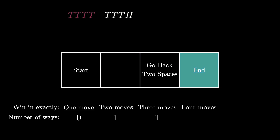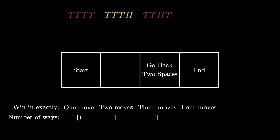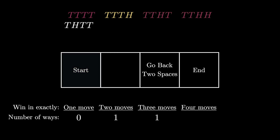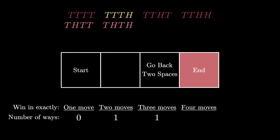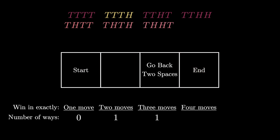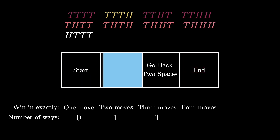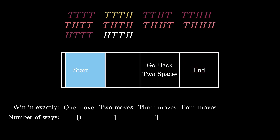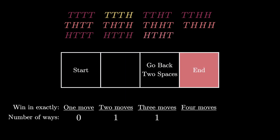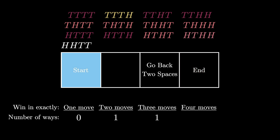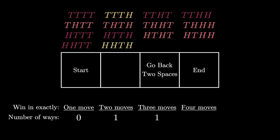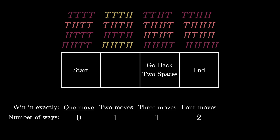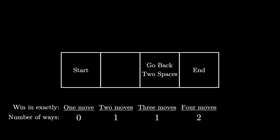Let's run one more example: how many ways are there to win in exactly four moves? Running through the 16 different sequences of length four, some win but in fewer than four moves (highlighted light red), some are losers (deep red), and some are winners in exactly four moves (highlighted yellow). Working through all 16 examples, there are exactly two ways to win in exactly four moves.